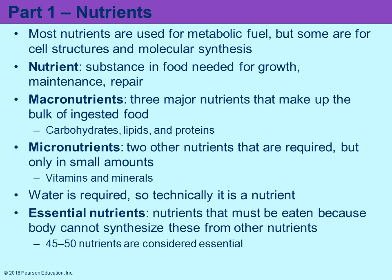When we look first at the nutrients — and this chapter is divided into different parts — Part 1 deals with nutrients. These are substances that the cells require for growth, for repair, for maintenance. We divide them into macronutrients and micronutrients. Macronutrients have three major subgroups and make up the majority of the food that you ingest: carbohydrates, lipids, and proteins.